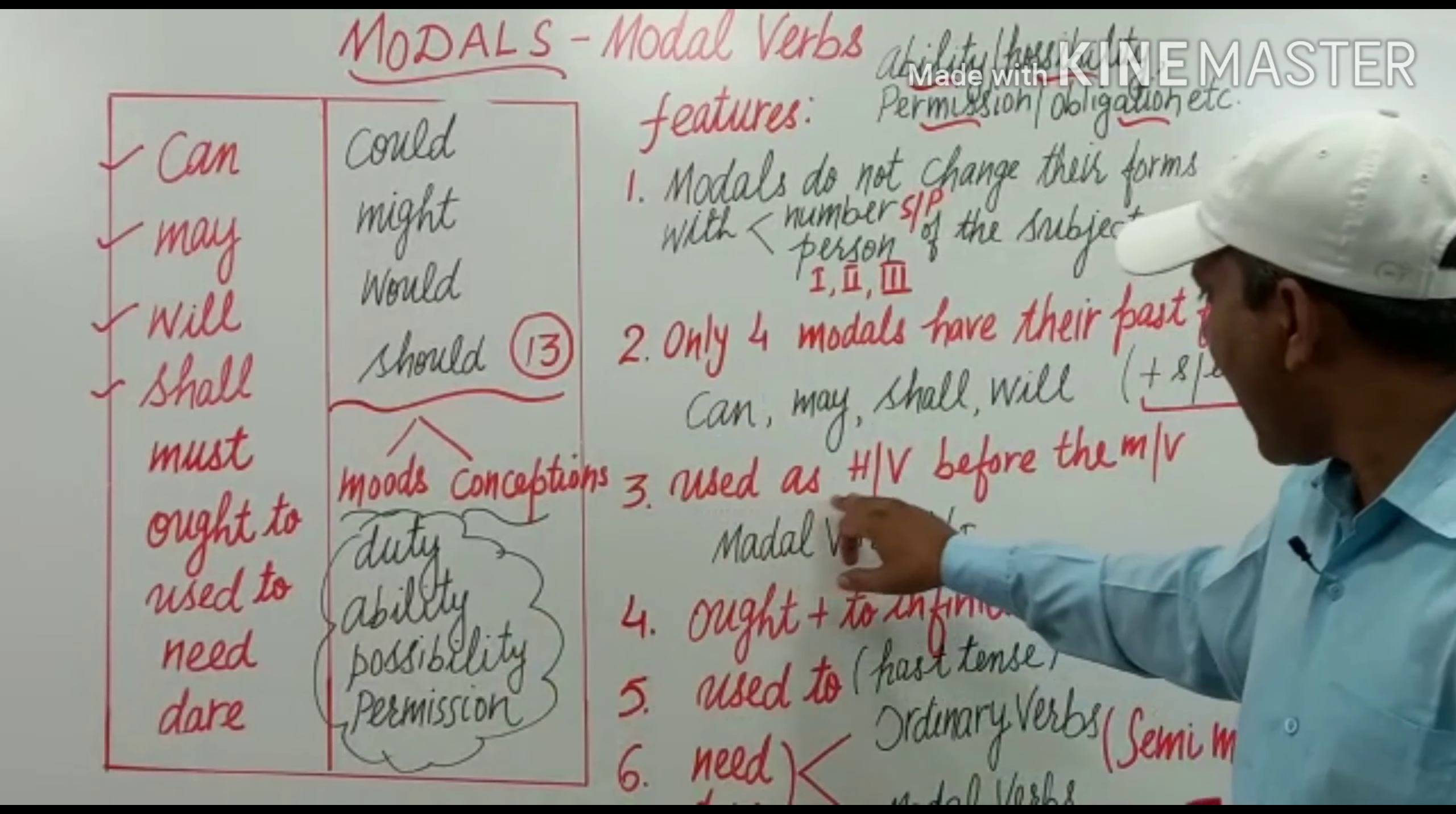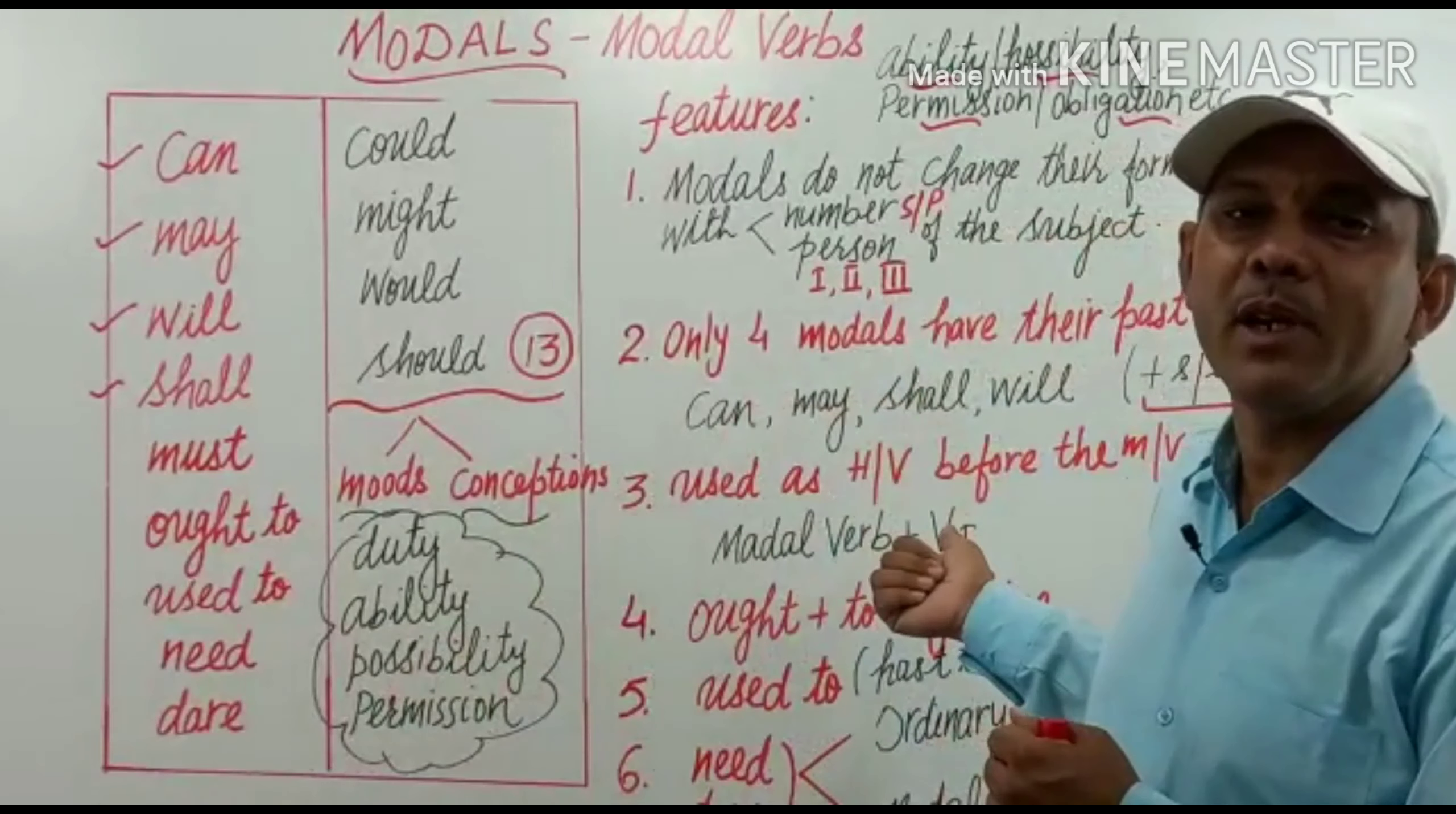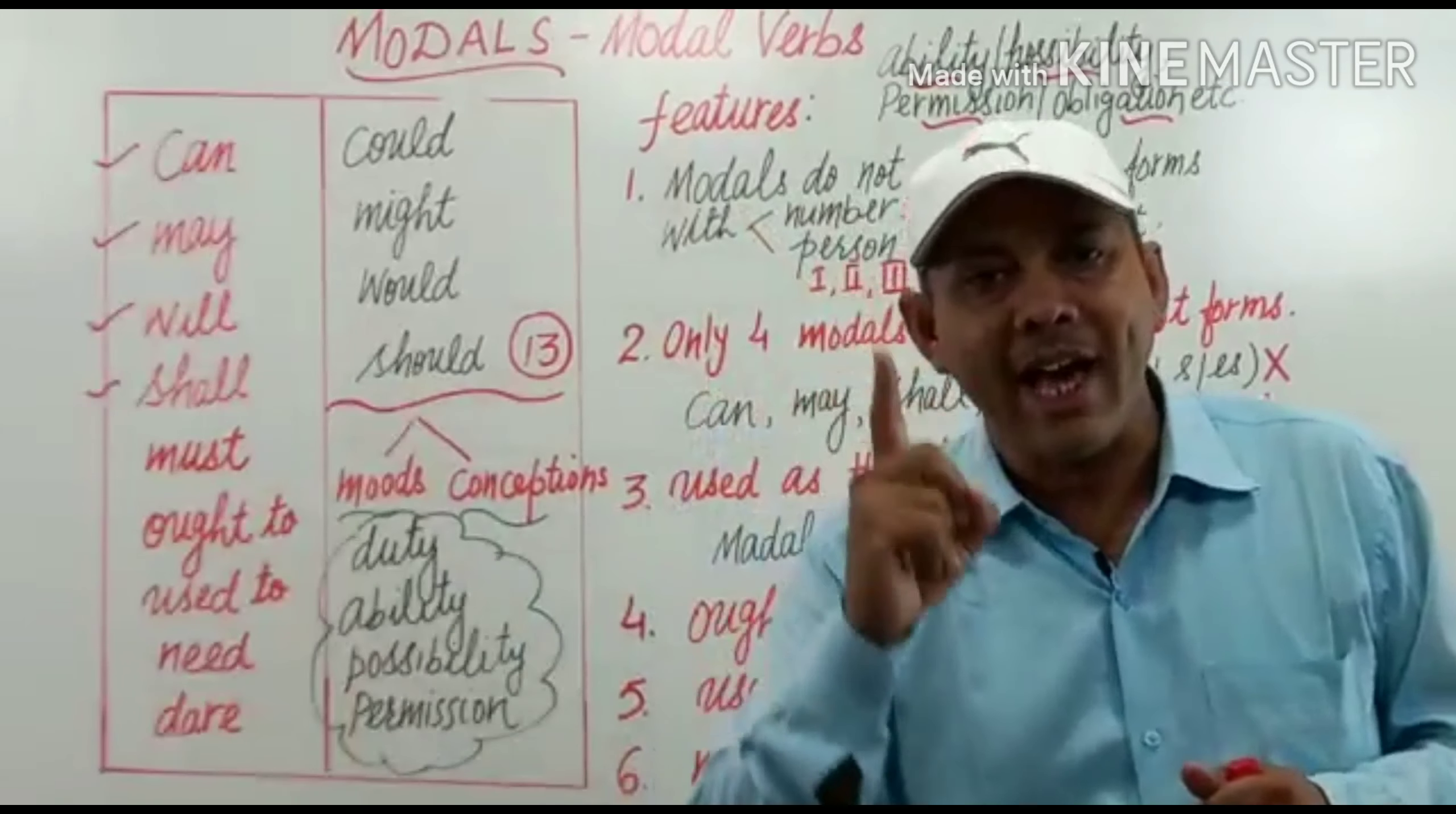Modals are used as helping verbs before the main verb. As we have discussed in case of primary auxiliaries be, do and have, they can act in both ways, as ordinary verbs means main verbs or as helping verbs in the sentences. But modal auxiliaries do not have the use as main verb in the sentence except need and dare. These eleven models are used as only helping verbs.